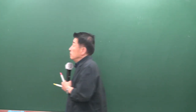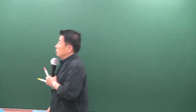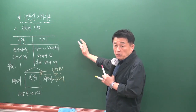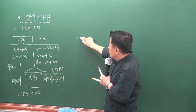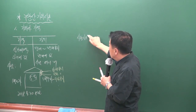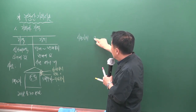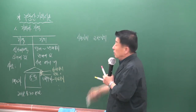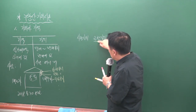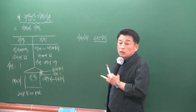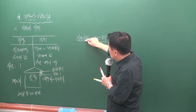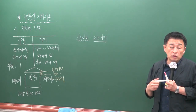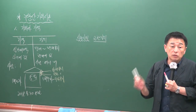아담 스미스는 재화의 가치가 사용 가치와 교환 가치로 구성되어 있다고 했습니다. 재화가 시장에서 교환 가치를 갖기 위해서는 사용 가치가 있어야 합니다. 사용 가치가 없는 재화는 교환 가치가 성립할 수 없습니다.